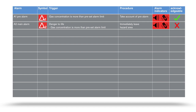The alarm display can be optionally supplemented by a hazard symbol. The STEL alarm indicates that a gas concentration has exceeded an average value of 15 minutes. Leave the hazard area immediately.